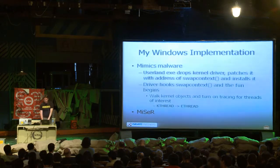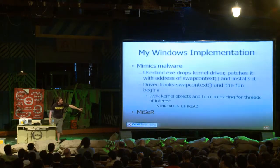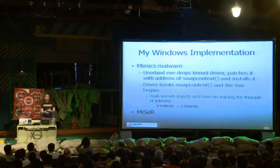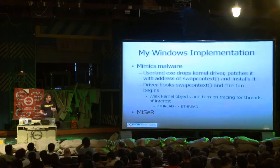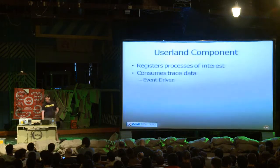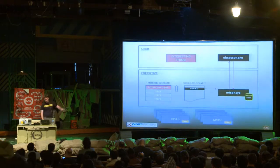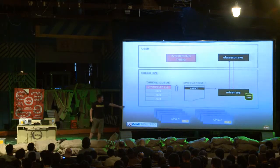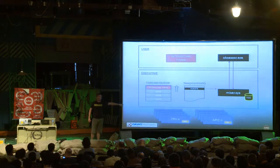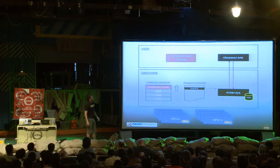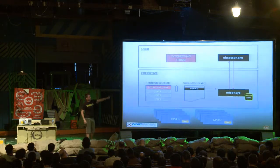My Windows implementation is called Miser — M-S-R, Miser. It mimics malware. There's a user land component that drops a payload detecting if you're using PAE — physical address extensions. I have a user land component that talks to the kernel and gets data back. For every CPU you have, you need to set the MSRs properly, and for every APIC you have, you need to set the local vector table if you're using interrupts. My code hijacks swap context, and then we record the traces and send them to user land.